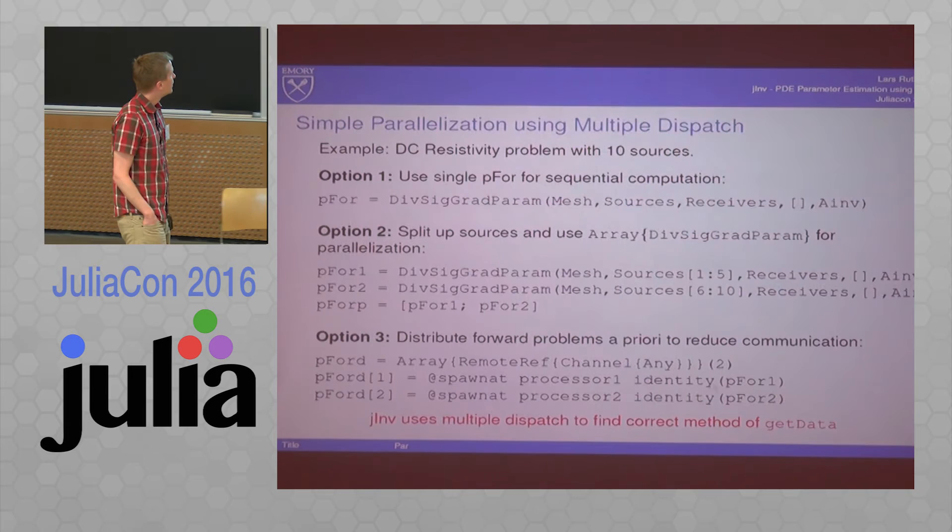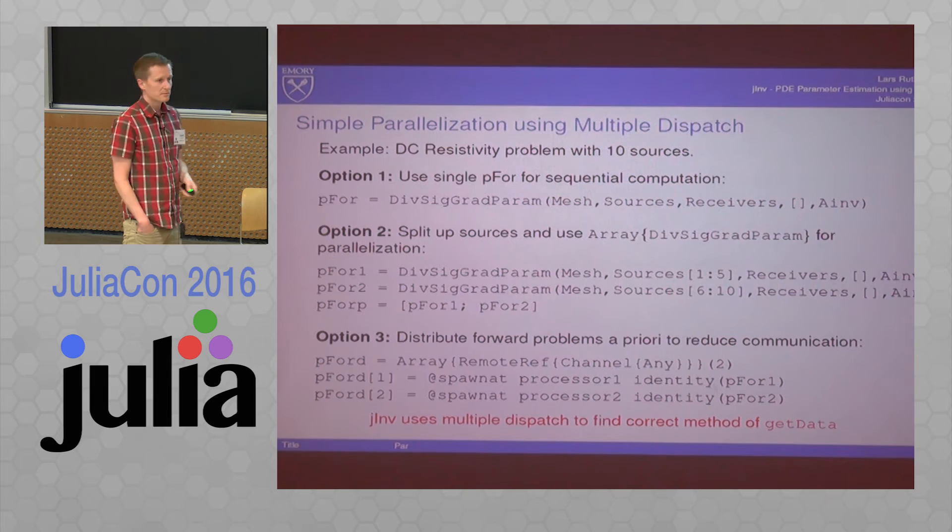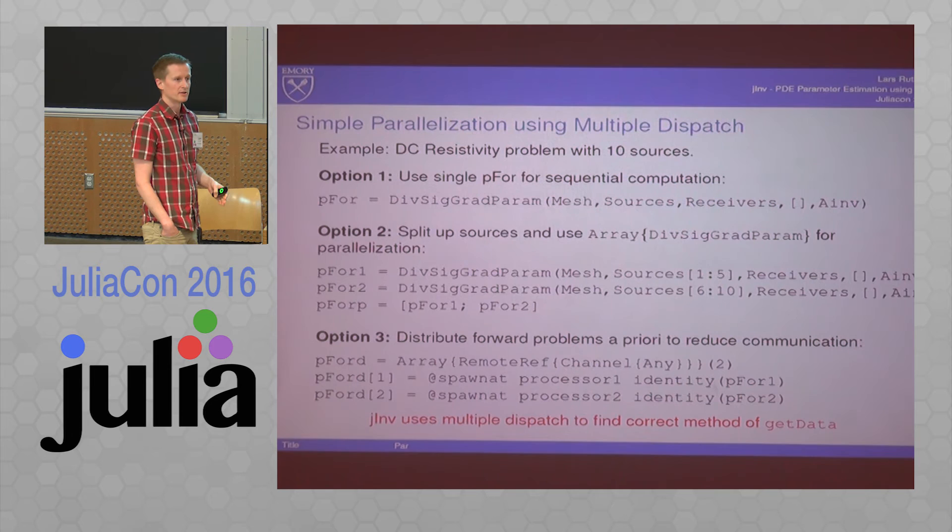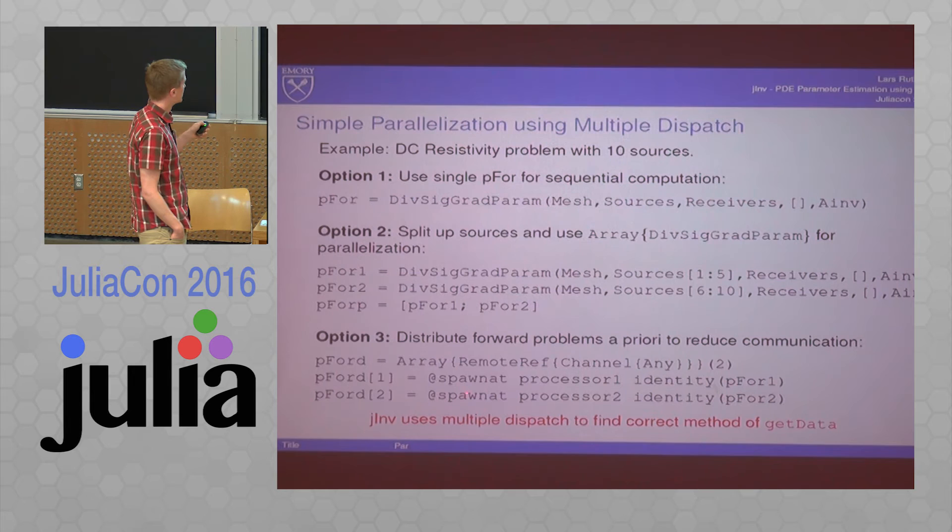So this is how you do that. The div-sigma-grad-param basically defines one of those problems. You can break up your sources into two batches, get two of them, stack them underneath, then we do some on-the-fly parallelization. This is going to be very communication intensive, because we send stuff around.